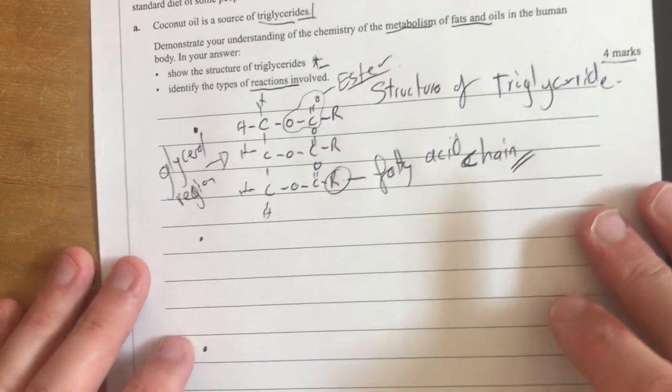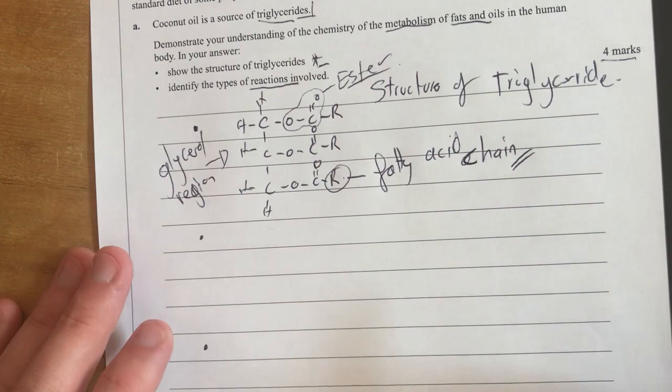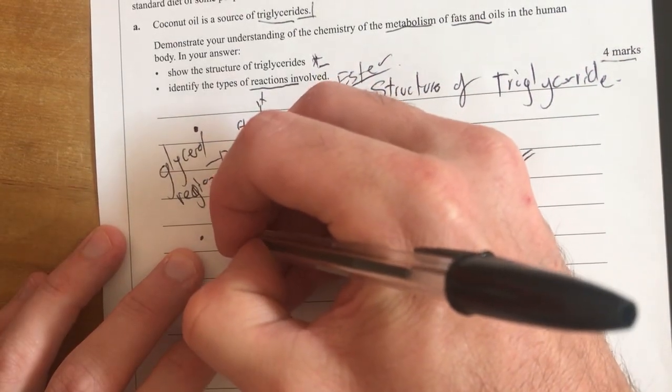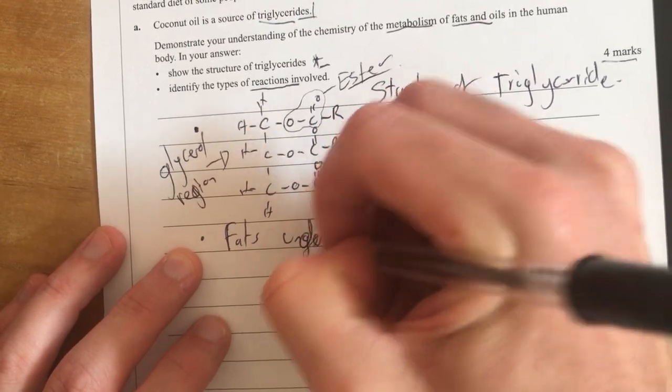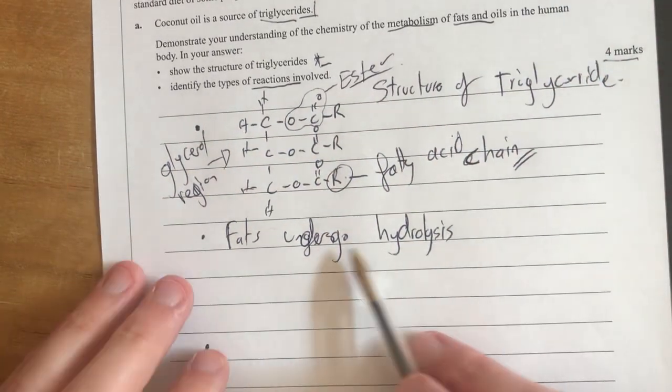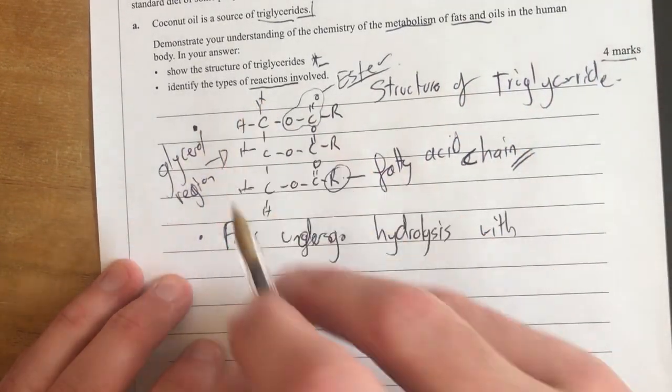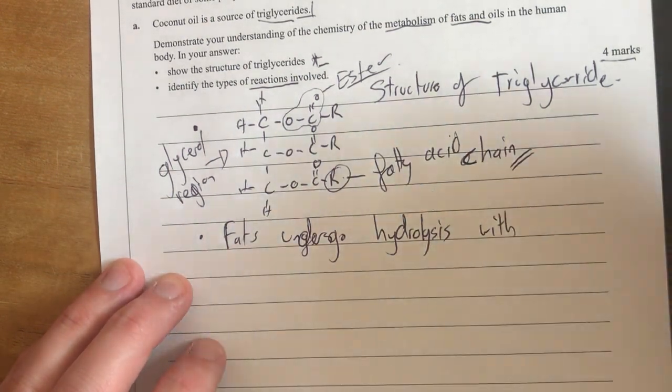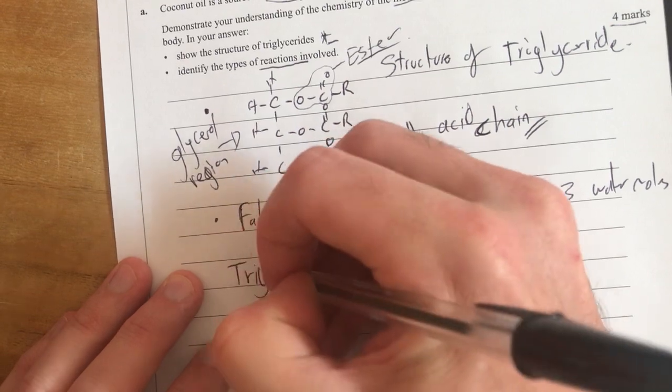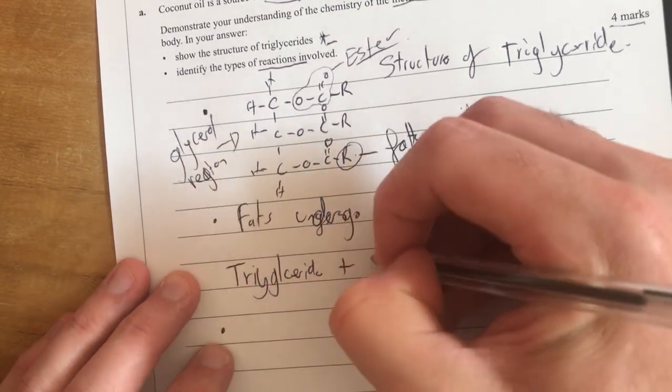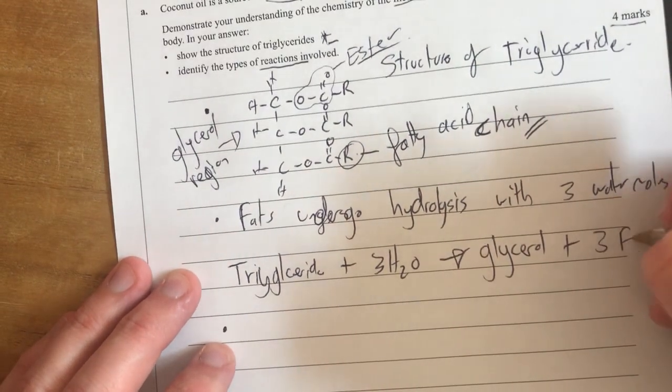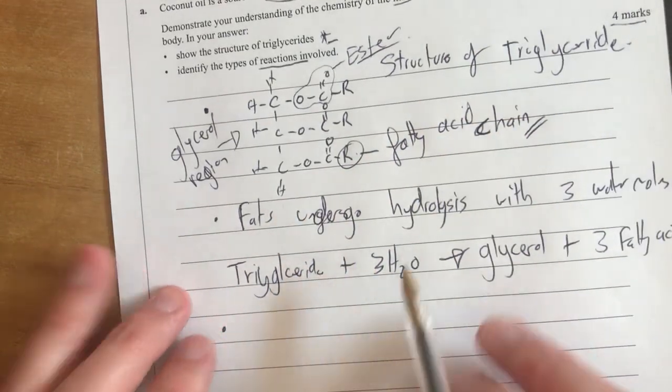So I'm going to draw it then I'm going to label what the parts are and hopefully that's enough for at least one mark if not two of this question. The second thing is what are the types of reactions involved? So what is actually going to happen here? We are starting off when we digest a fat and oil we're going to undergo, so I'm going to say fats undergo hydrolysis with, and my reaction needs to have everything a reaction should, so it should have my products and reactants with three water molecules. So I might show this the fact that I have my triglyceride plus three H2O and that's going to form my glycerol plus three fatty acids.